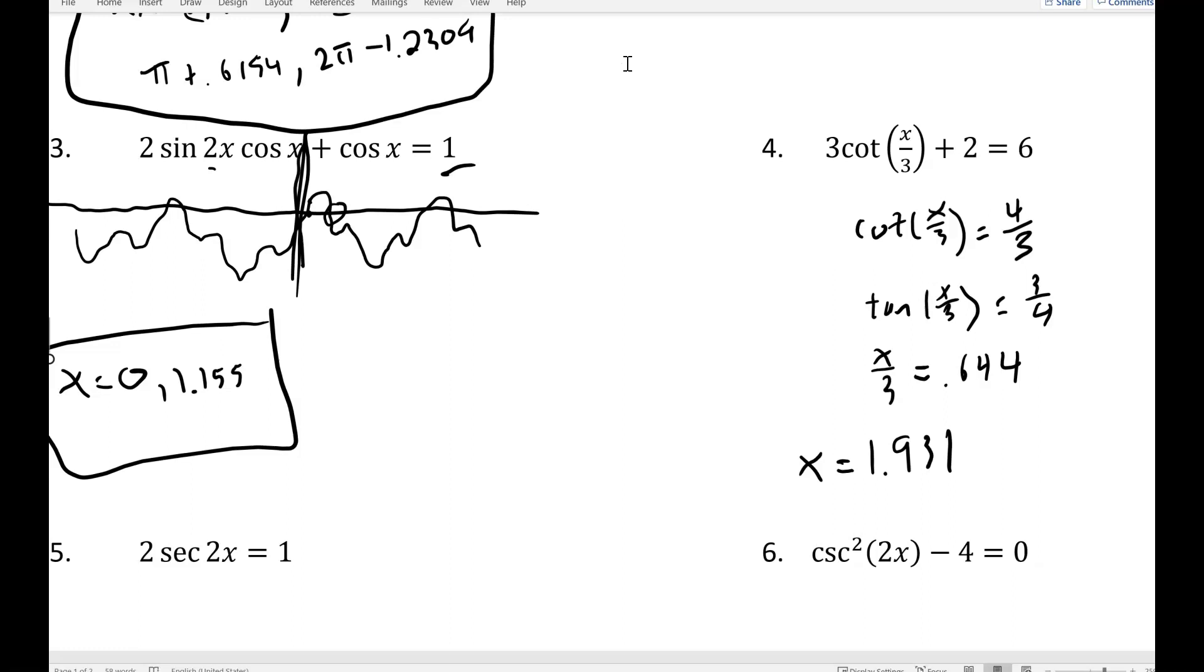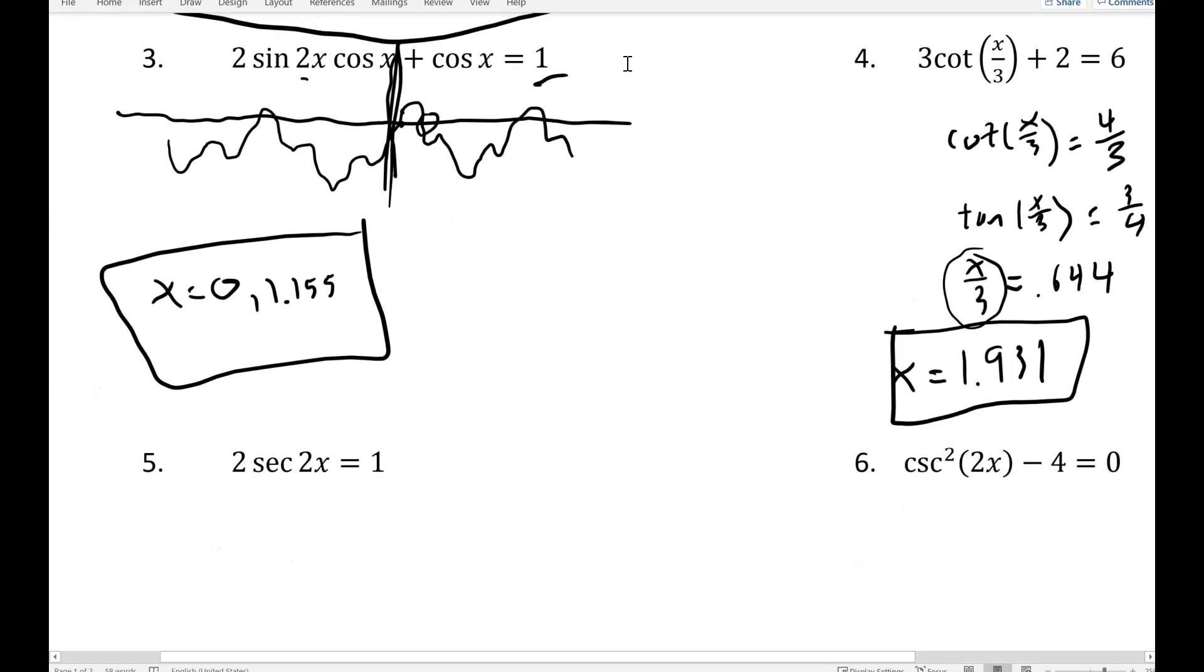Now, we know with tangent, it comes every pi. So if 0.644 works, then if I add pi to that over and over again, it will give me all the other answers. But remember, I'm dividing by 3 over here. So I've got to multiply both sides by 3. So I'm going to take my original answer and multiply by 3. And that gives me x equals 1.931. And now, if I want to get another answer here, instead of adding pi each time, I'd actually be adding 3 pi because this stretches everything out. So if I add 3 pi to that, of course, it's going to be bigger than 2 pi. So I stop right there and say that's my answer.